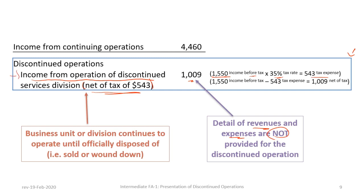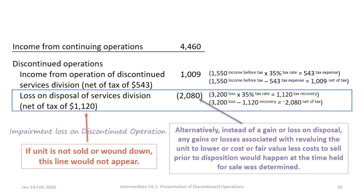If Endeavour Corp didn't have any discontinued operation, the entire section wouldn't exist at all. We also report any gains or losses on the final disposal of the business unit, presuming it is actually sold or wound down in the fiscal period. If the operation had not been disposed of in the year ended December 31, 2020, this line item would not exist — it would appear in the final year of disposition.